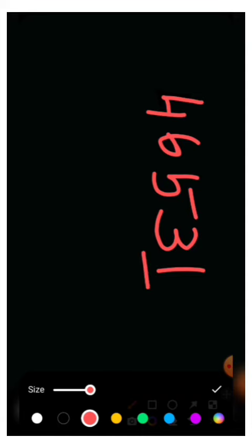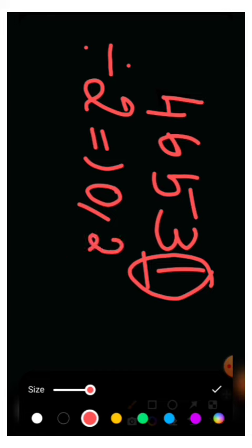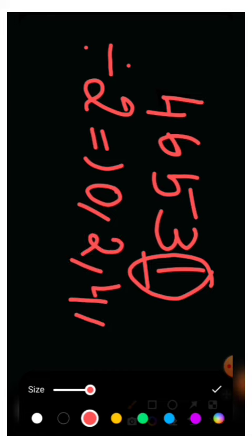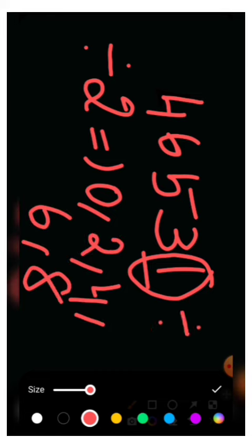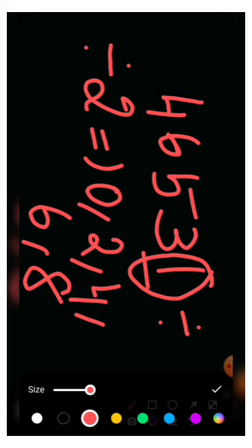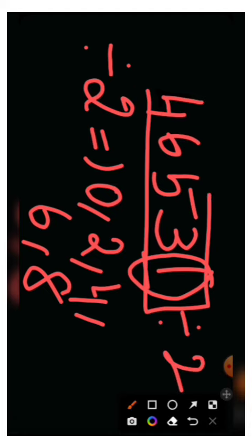Now we have the unit digit. Divisible by 2 means the unit digit is 0, 2, 4, 6, or 8. Like this!